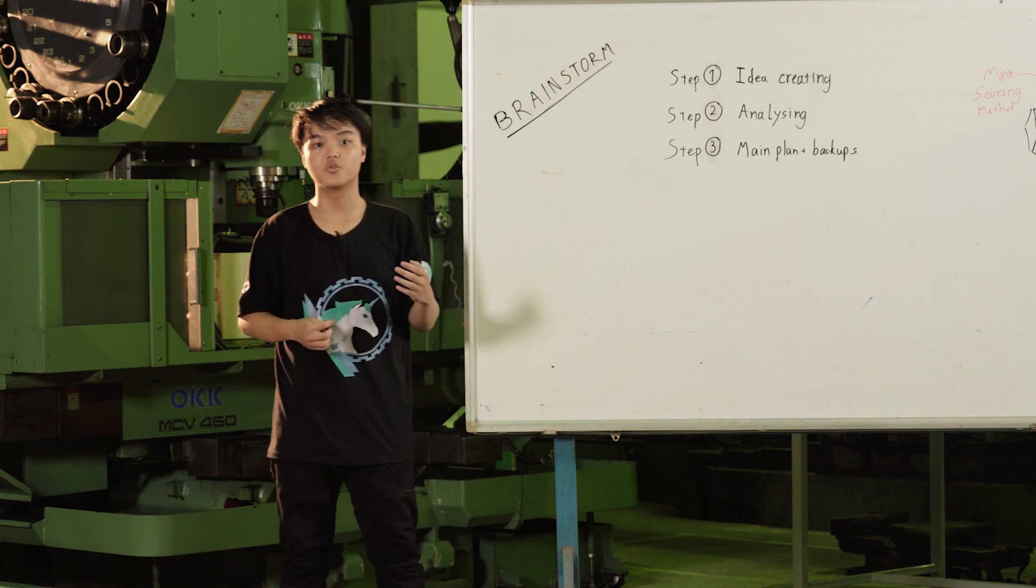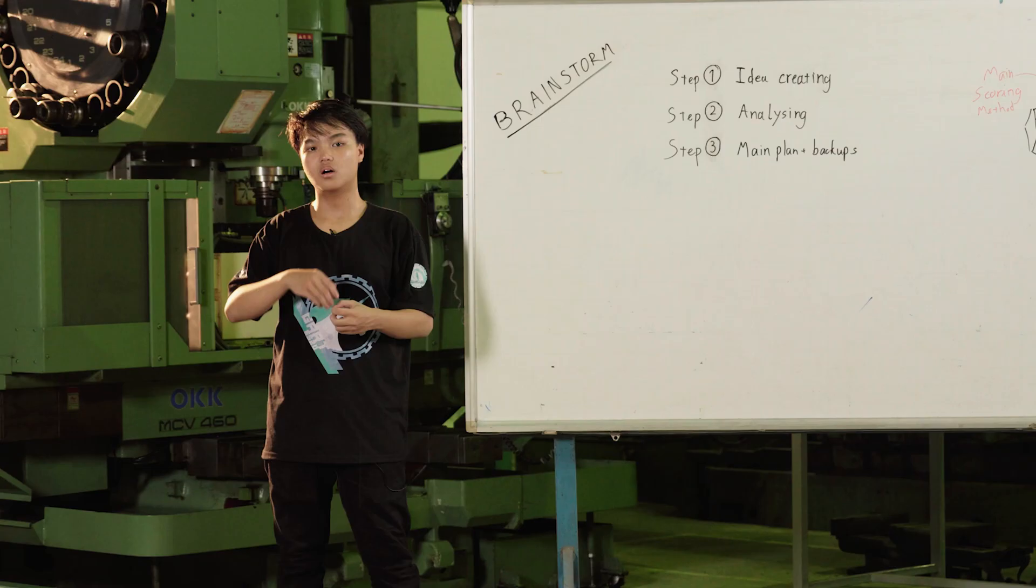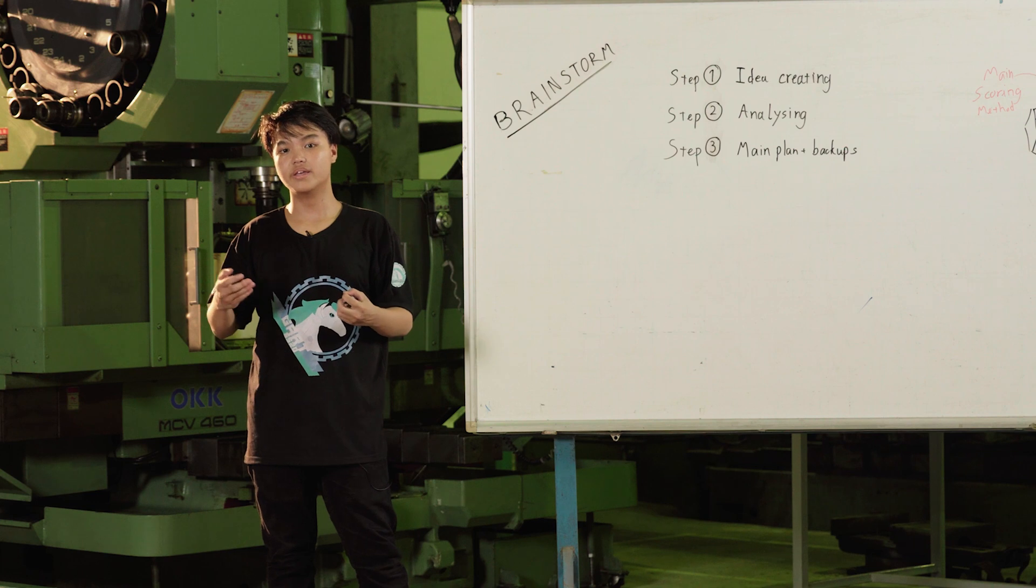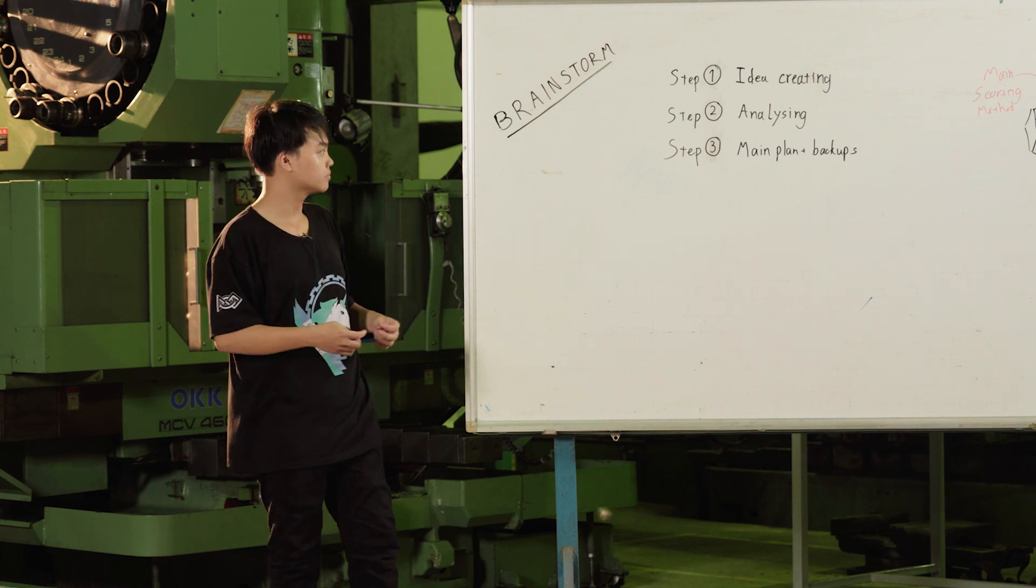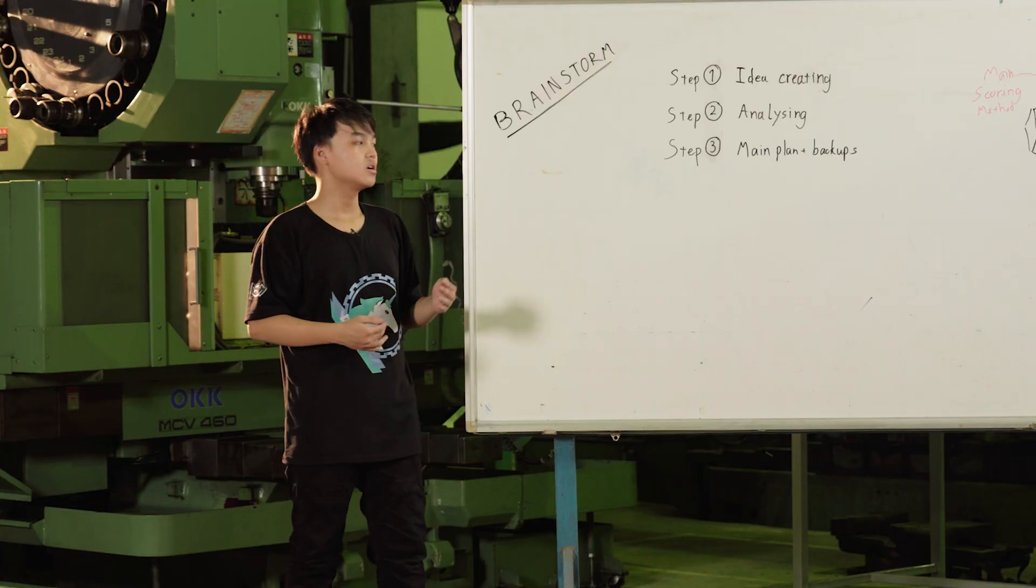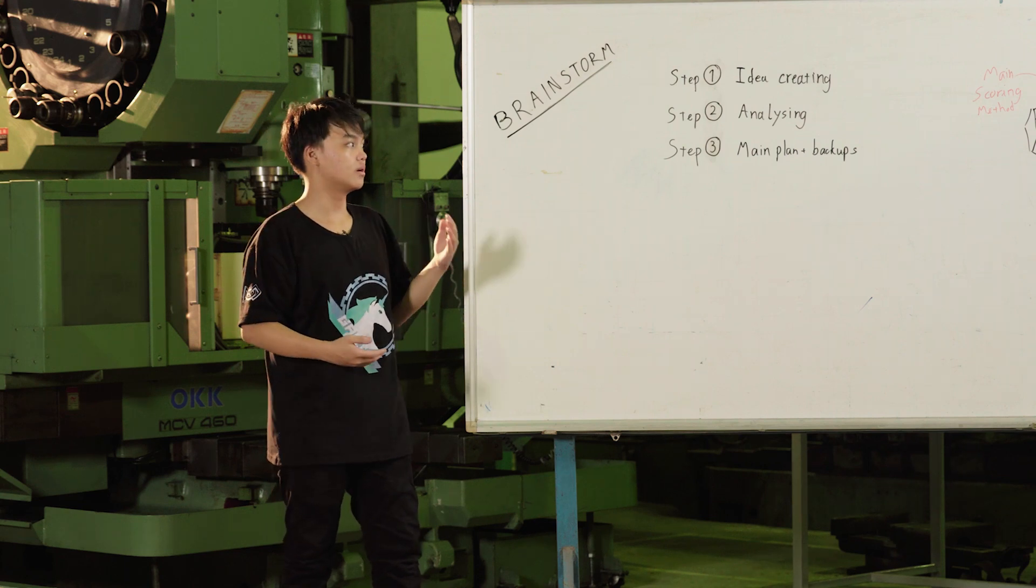The second step is to analyze all of your ideas that you have gathered. Find out their pros and cons, and determine which one is the most valuable among a range of different mechanisms available in the FRC community. Step three is to decide on one main plan that you will stick to for the rest of the build season and make up as many backup plans as possible. The more backup plans you have, the more organized your team is in the future if there shall be any failures with the main plan.